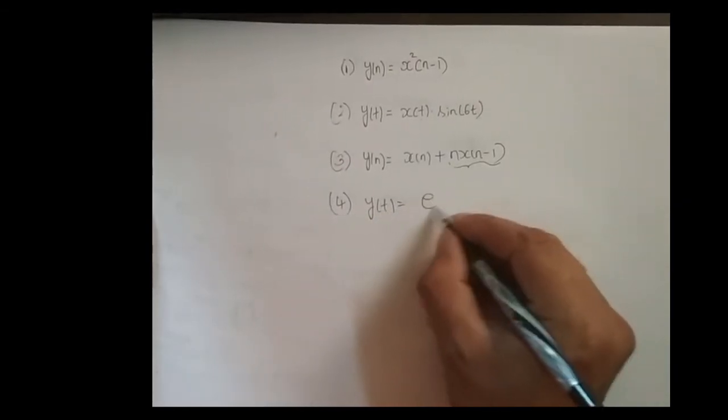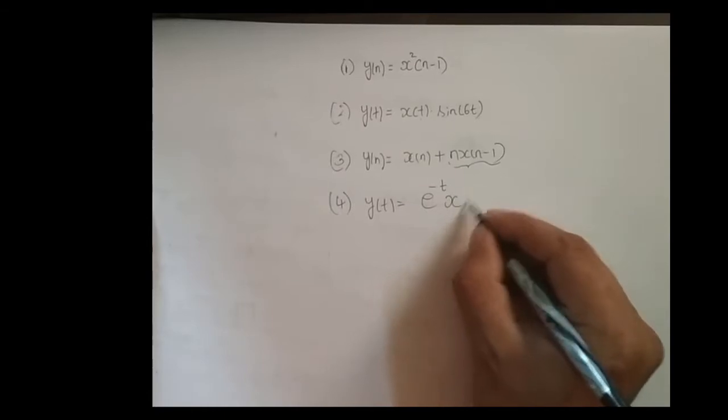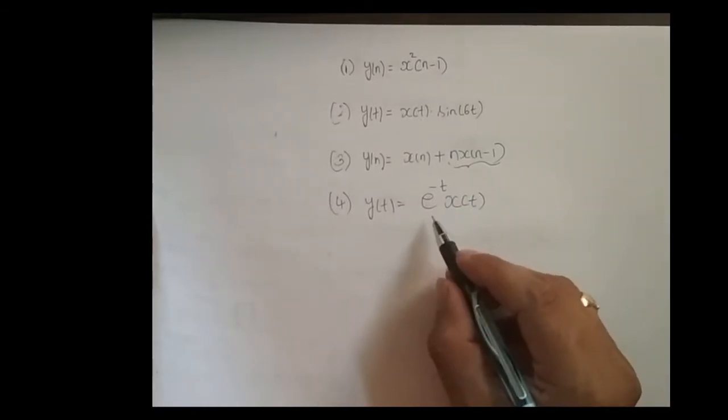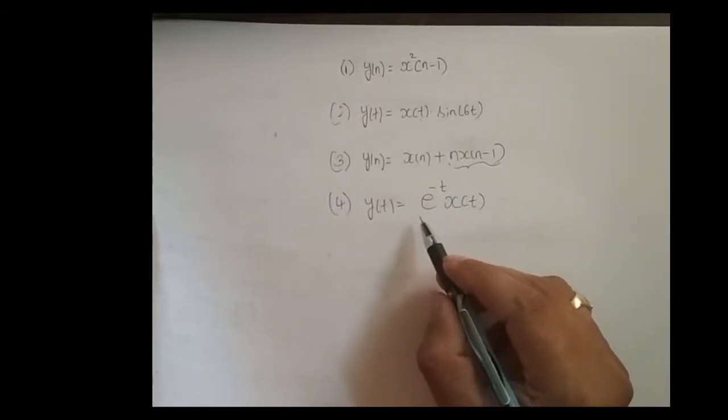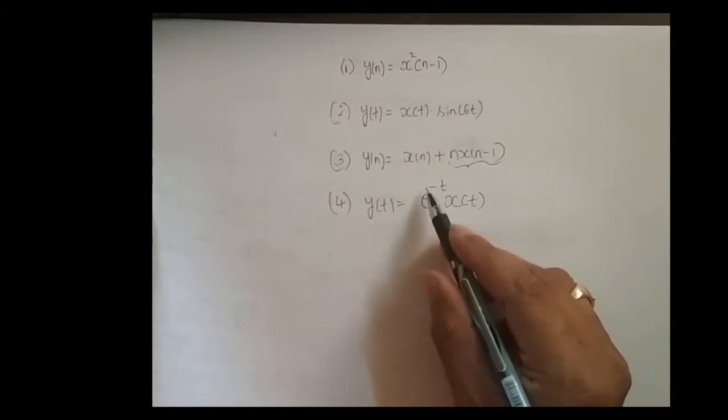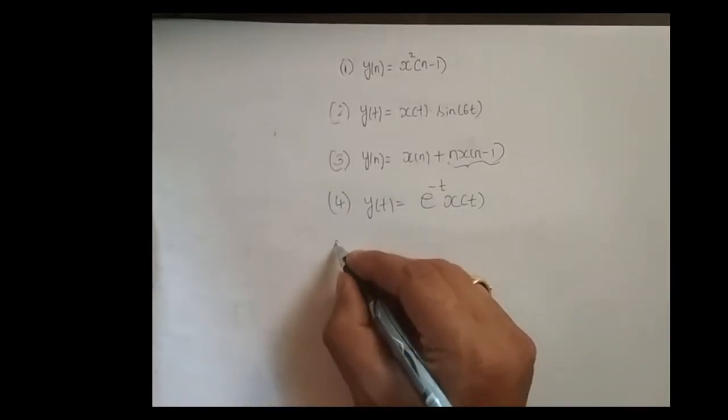Fourth one: y(t) = e^(-t)x(t). So here, whatever signal you feed, that is x(t), for that, an exponentially decreasing signal is getting multiplied.